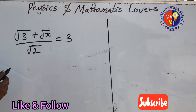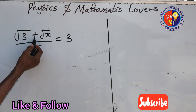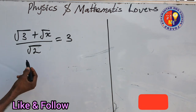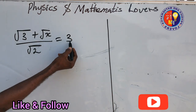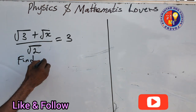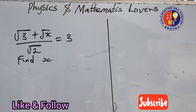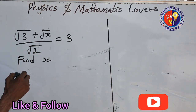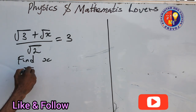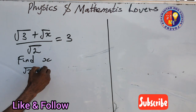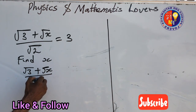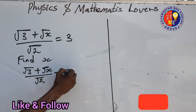The question says: root 3 plus root x, all over root 2, equals 3. You are asked to find 5x. So our solution: we have root 3 plus root x, all over root 2, equal to 3.